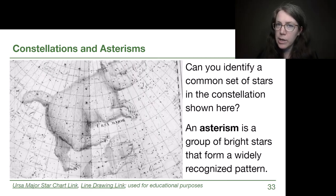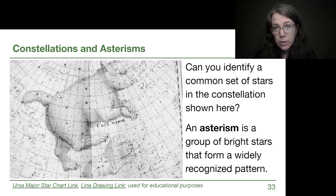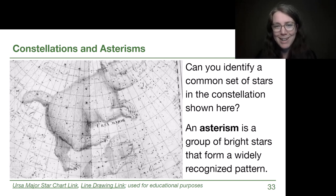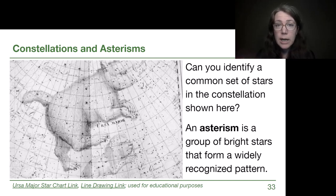That idea you might have started with — a pattern you can recognize in the sky, or line drawings connecting some bright stars — has a different term. You may not have heard it before, but it's what you might have in mind when thinking about what you can recognize in the sky. That term is called an asterism. An asterism is a group of bright stars that form a widely recognized pattern. Here on screen is a stylized map of part of the sky including the full constellation of Ursa Major.